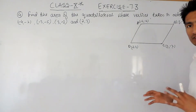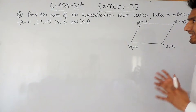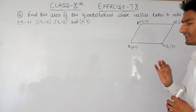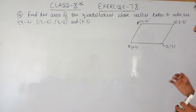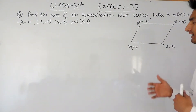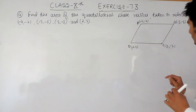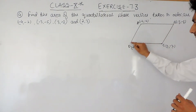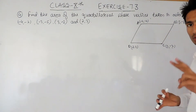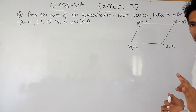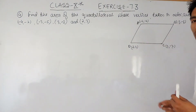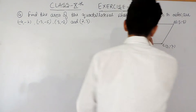In coordinate geometry we haven't studied any formula to find the area of a quadrilateral, but we have studied a formula to find the area of a triangle. So what we have to do is convert this quadrilateral into triangles, and then using the formula we can find the area. You can join a diagonal, which will divide the quadrilateral into two triangular parts, and adding those areas gives the area of the quadrilateral.